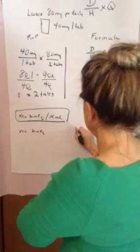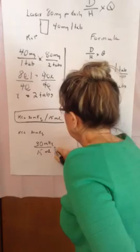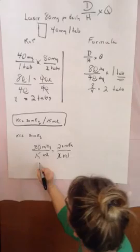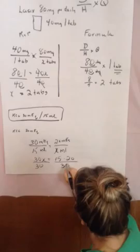So let's do ratio and proportion first. We have 30 milliequivalents is to 15 mils as 20 milliequivalents is to x mils. I'm going to cross multiply: 30x equals 15 times 20. Divide both sides by 30.